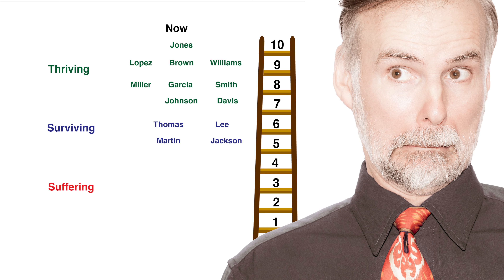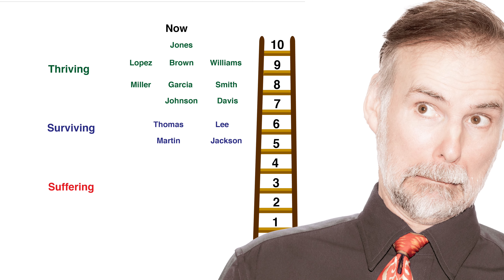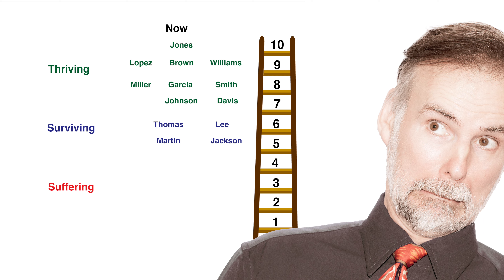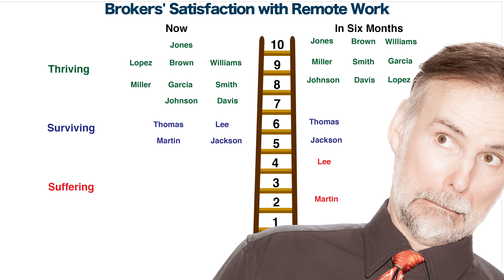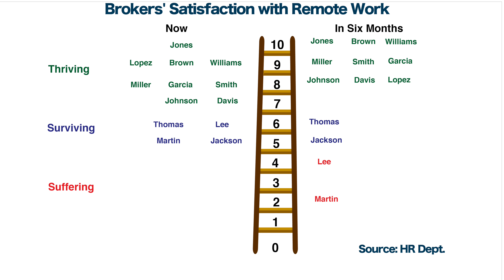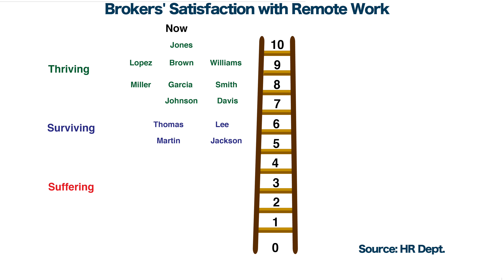Based upon the brokers' responses, you created a Cantril Ladder for their present and future outlook. At the top of the diagram is the title, at the bottom is the source of the data. On the left side of the Cantril Ladder are the names of the brokers written beside the step that they chose for their present outlook on working remotely.